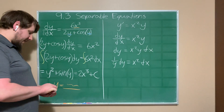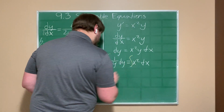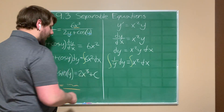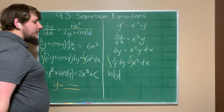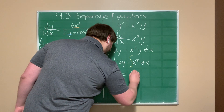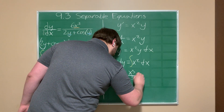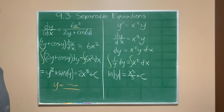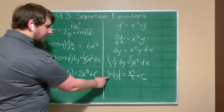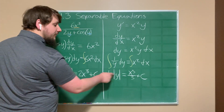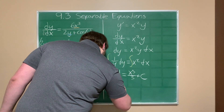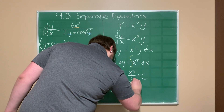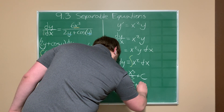Now the equation is separated, so I apply an antiderivative to both sides. On the left, the antiderivative of 1/y dy is the natural log of the absolute value of y. On the right, the antiderivative of x² is x³/3 plus our constant of integration. In this case, we actually can try to solve for y — if we exponentiate both sides with base e, we can cancel the natural log, giving |y| = e^(x³/3 + C).